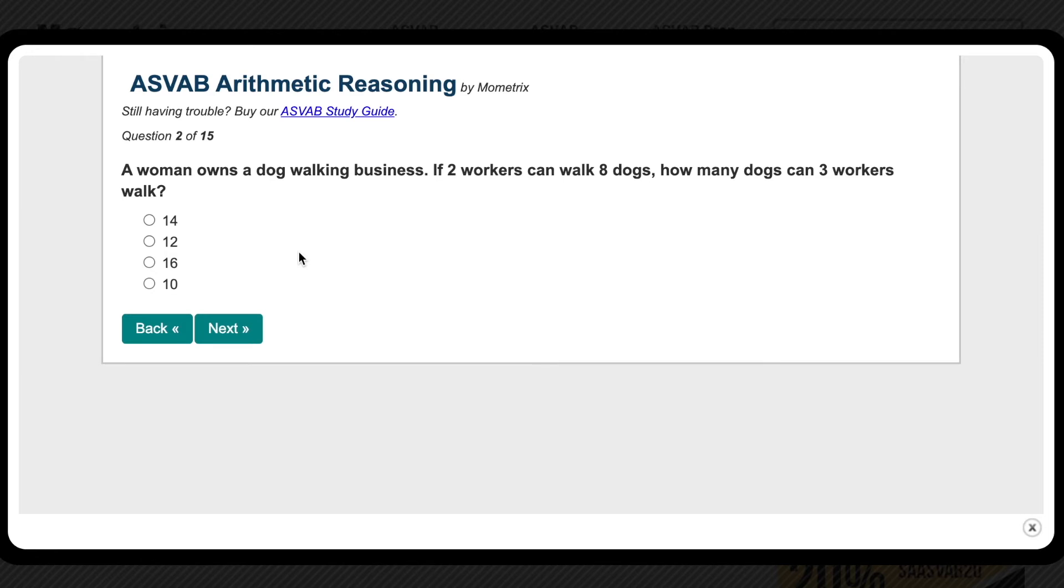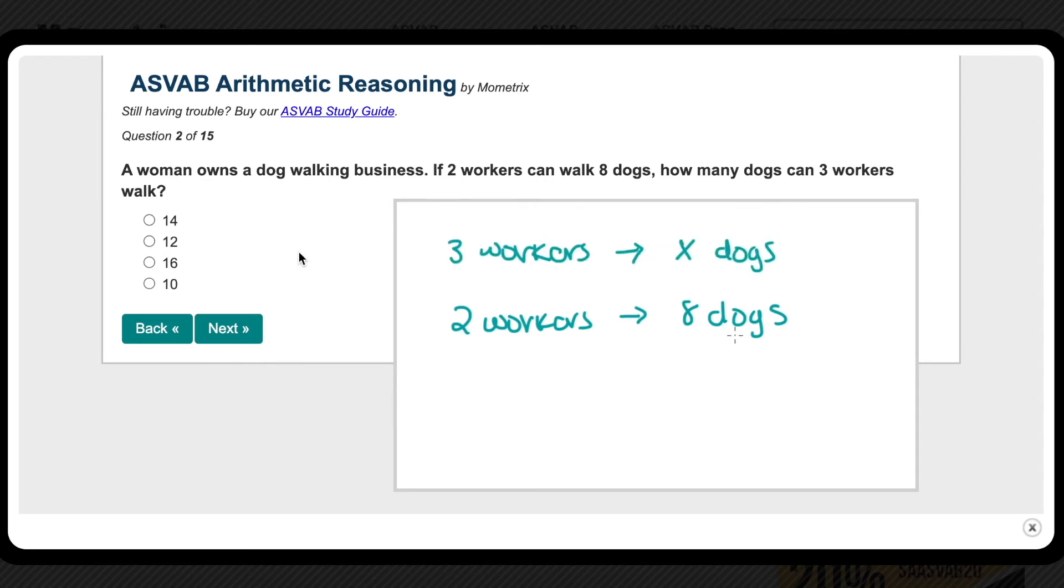Next, let's write out an equation, which to me is the hardest part about word problems, knowing how to represent words into numbers and equations. But again, let's just start off with what we know. So we have two workers walking eight dogs. And we're trying to figure out how many dogs can three workers walk. With ratios, we can pretty much write this into an equation, as long as we put all of the workers on one side of the equation and all of the dogs on the other side. So the units have to match up. With ratios, we can set them up by just dividing them by each other. So we'll get 3 over 2 equals x over 8.